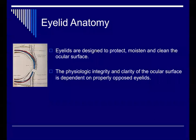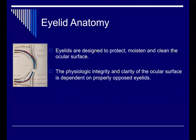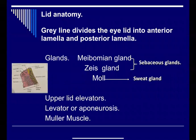For any kind of lid surgeries, we have to know these landmarks and understand the anterior and posterior lamella because each has different actions and different approaches. The eyelid is usually designed to protect the globe, moisten it, and clean the ocular surfaces — protecting from exterior pathogens, trauma, or anything by blinking.